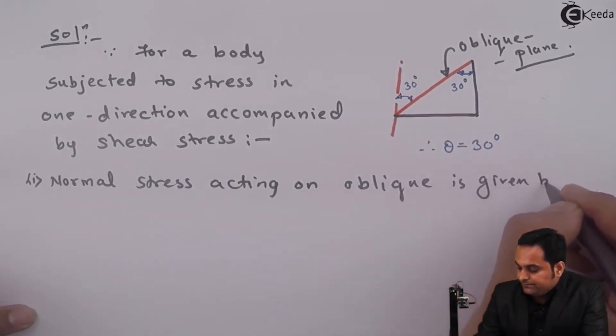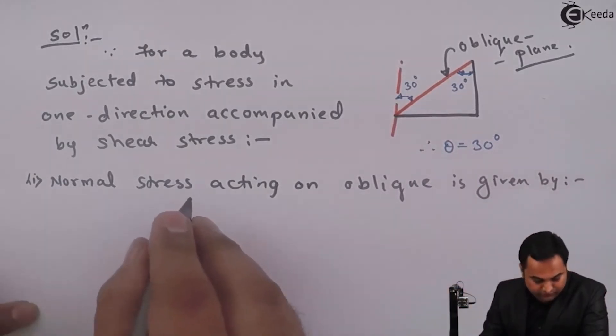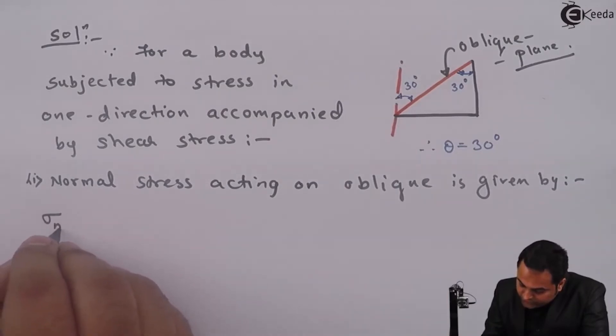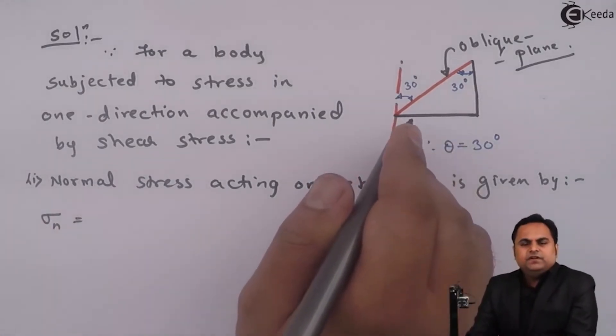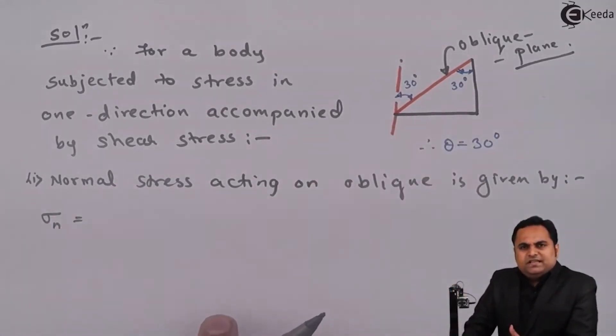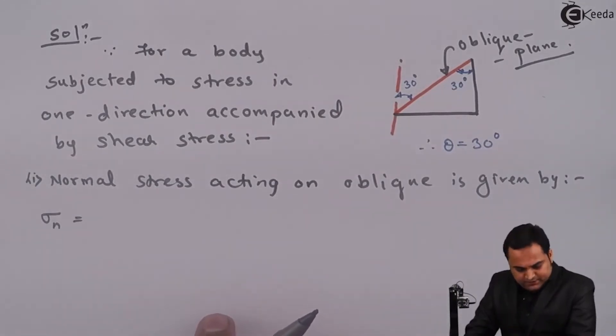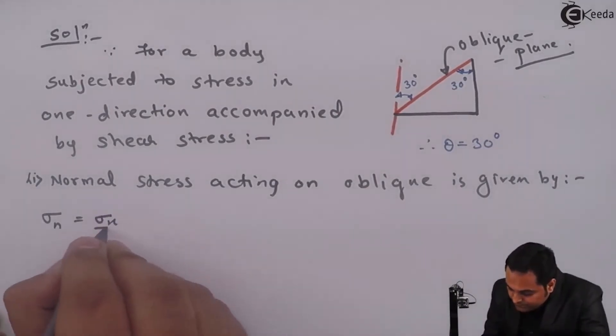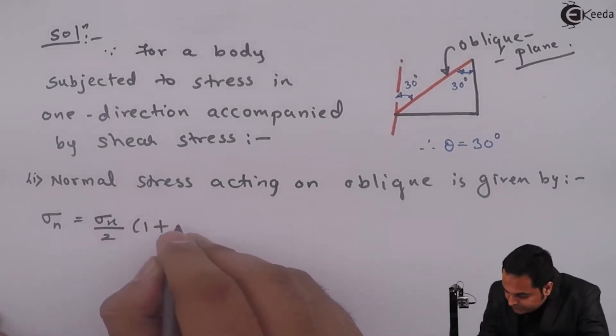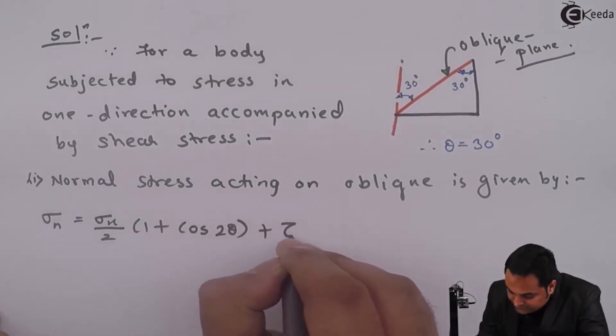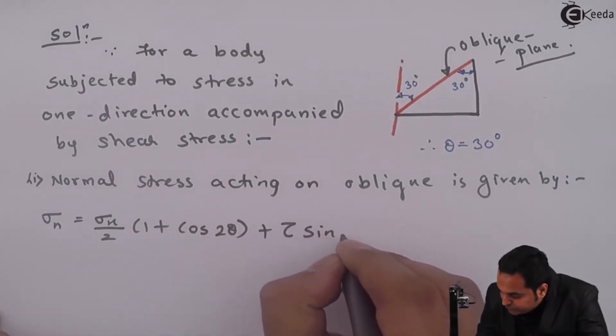It is given by: we have the formula that normal stress for such a condition in which we have a normal stress and shear stress. The formula is sigma x by 2 into 1 plus cos 2 theta, plus tau into sine 2 theta. This is the formula of normal stress.